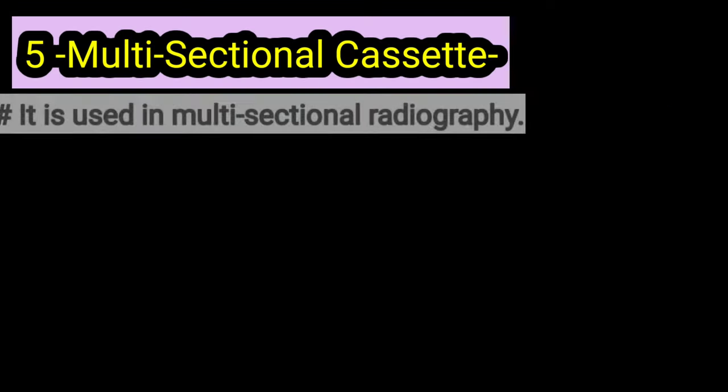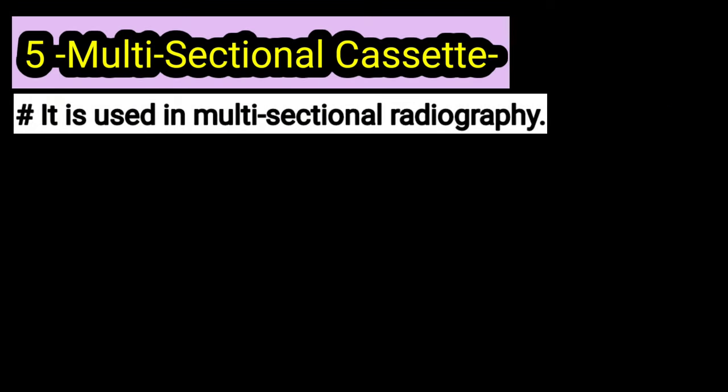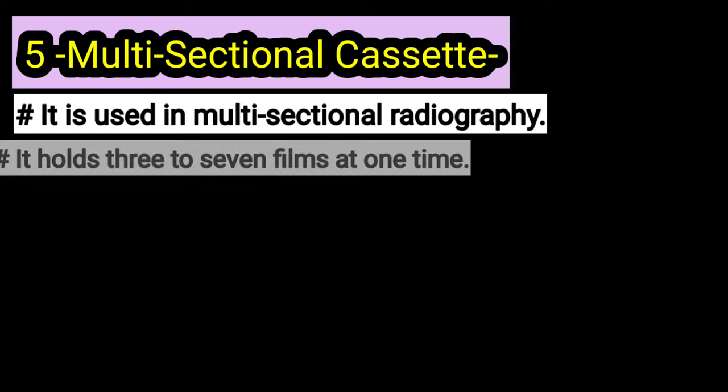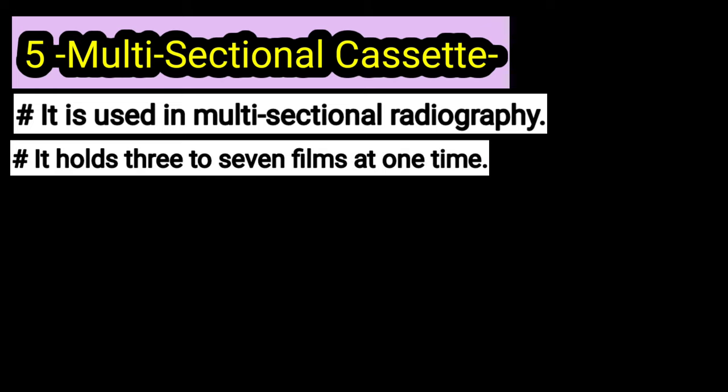The gridded cassette is used to reduce scatter radiation and improve radiographic image quality. The multi-sectional cassettes are used in multi-sectional radiography. They are multi-section cassettes, meaning multiple sections allow three to seven films to be held at one time.